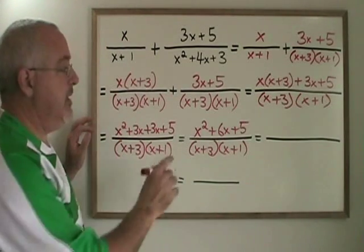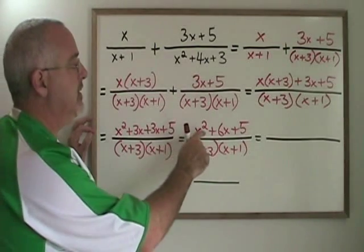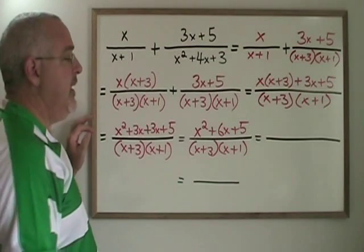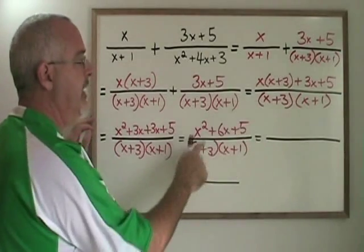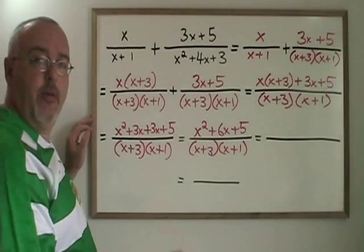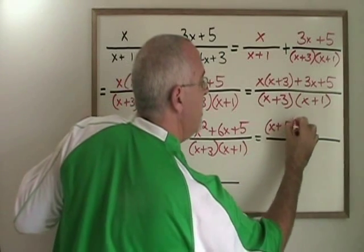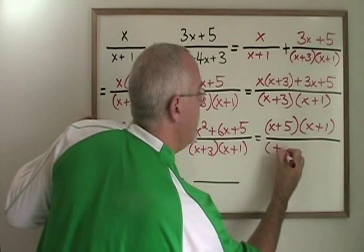In some questions at this point we will be finished, but this time we are not finished because our new expression in the numerator of our answer is factorable. It again is a simple trinomial. I ask myself what two numbers multiply to give five and add to give six. They are five and one. So this factors to x plus five times x plus one, still over the common denominator.